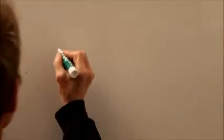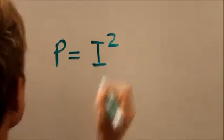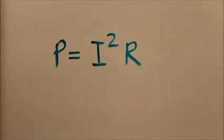Remember the formula for DC power? Power in watts equals the current in amperes squared times the resistance in ohms.